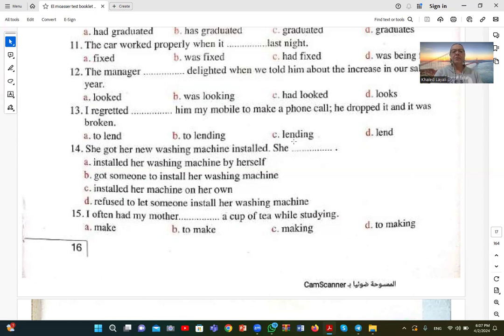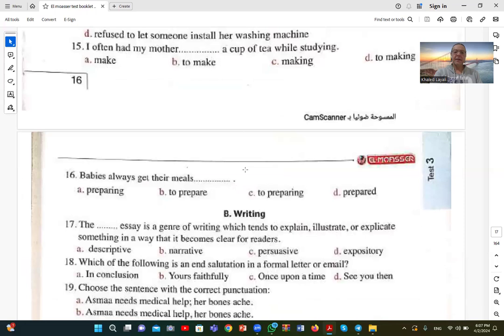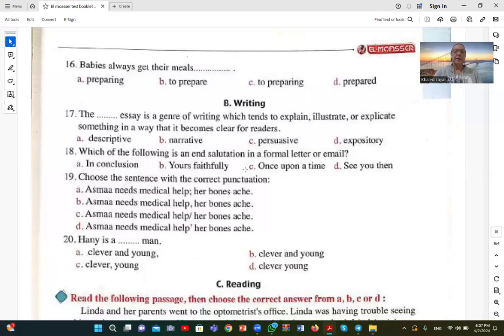Number sixteen: Babies always get their meals prepared. Meals are prepared for the babies; a baby or infant cannot prepare their own meal. So D, prepared, is the correct answer.